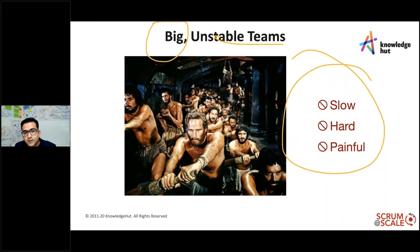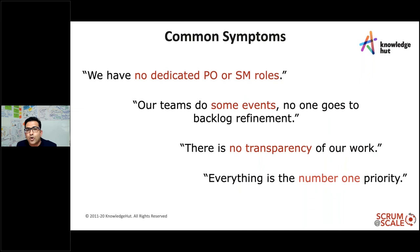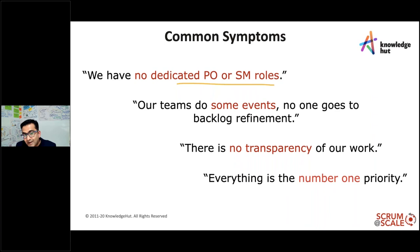Common symptoms I've heard: no dedicated Product Owner or Scrum Master roles. The Scrum Guide is clear — a team requires a Product Owner and a Scrum Master, that's your Scrum team. Some events never took place. Backlog refinement is optional but improves things significantly — it refines your backlog and puts you in a better position going into sprint planning, preventing marathon sessions.